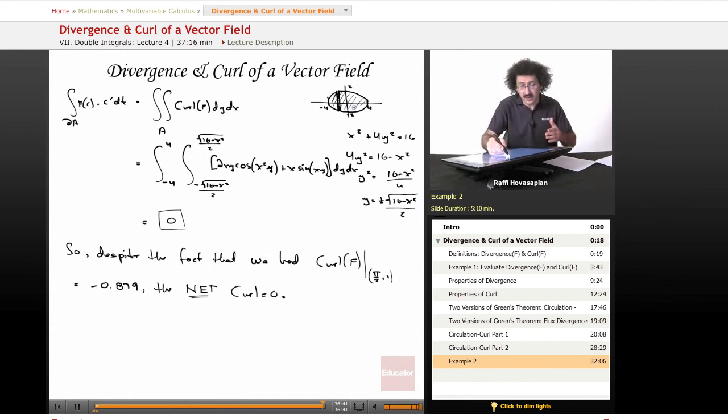the net curl equals 0. In other words, this vector field over this region is not rotating this way or this way. When the curl equals 0, we call the vector field irrotational. This vector field is irrotational.